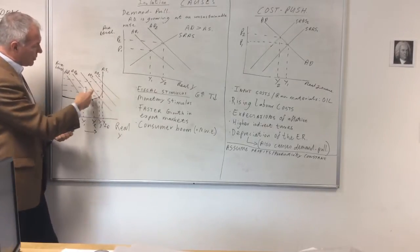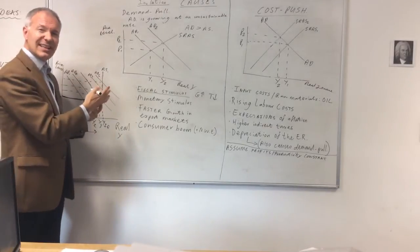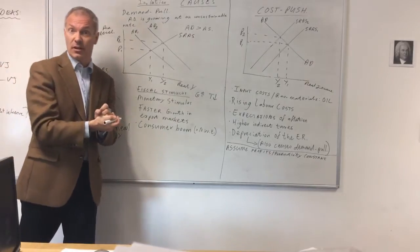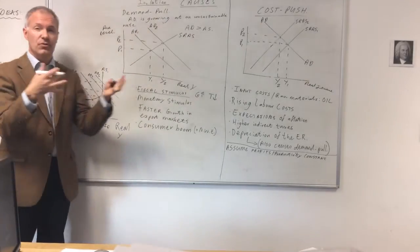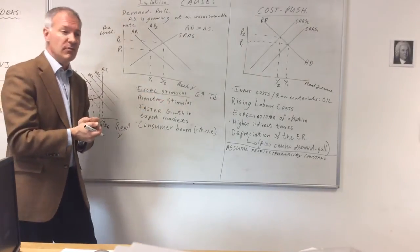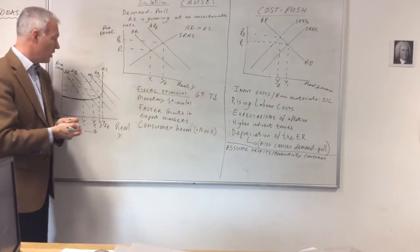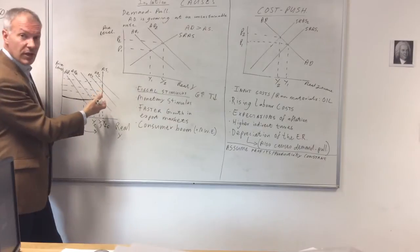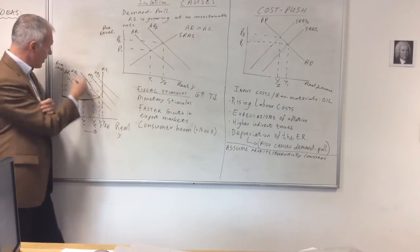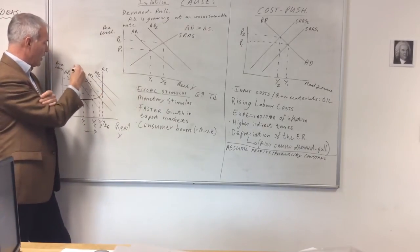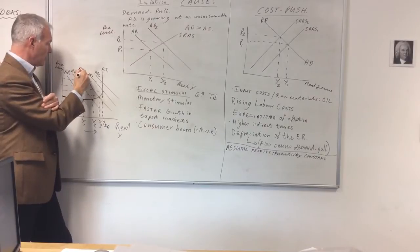Then what happens is aggregate supply becomes increasingly inelastic as shortages and bottlenecks occur in the economy. For example, the shortage of builders in the building trade necessitating higher costs, and therefore the price level starts to go up. This really begins to happen as we go from AD2 to AD3.